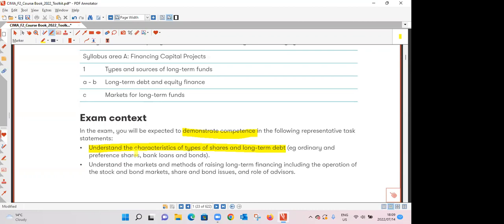So by the end of the lecture tonight you should be fairly comfortable with the characteristics of each of those types of finance. The examiner also expects you to have a good understanding of the markets and the various methods of raising long-term finance including the IPO and you also need to demonstrate competence in your understanding of the stock and bond markets as well as the advisors that are involved with the raising of finance.